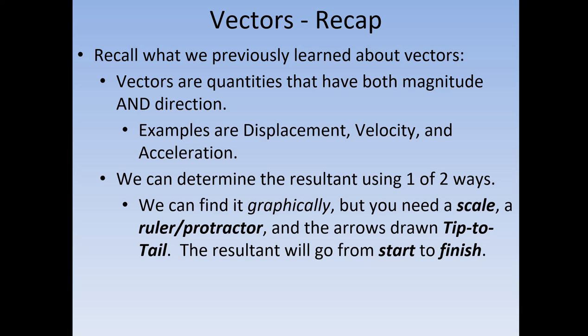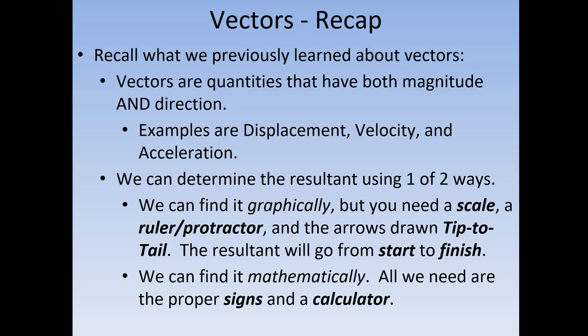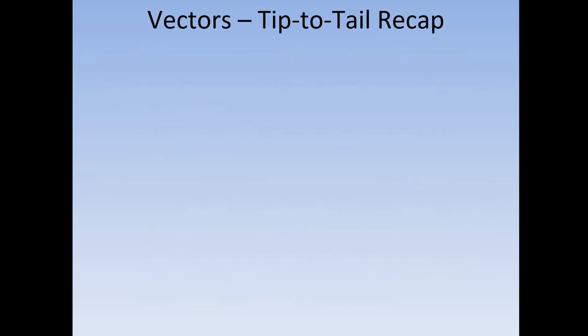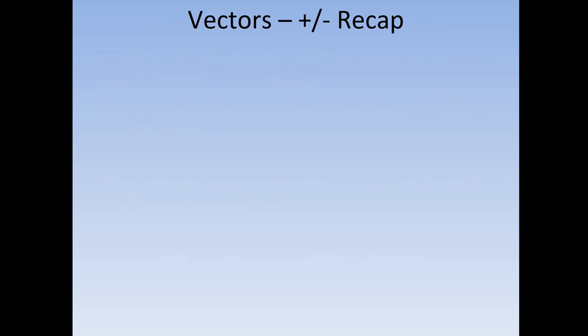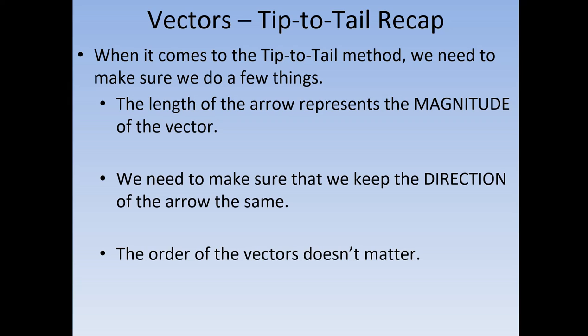We can find the resultant or the combination of multiple vectors by either drawing a diagram of it, making sure that it's to scale using a ruler or protractor, drawing it tip to tail, and making sure that the resultant goes from start to finish. Remember, this idea of making a diagram is essentially like a treasure map going to a location. The order doesn't matter — you can draw them in whatever order you want as long as you maintain the length and direction of each vector and keep it tip to tail; you'll still get to the same location.